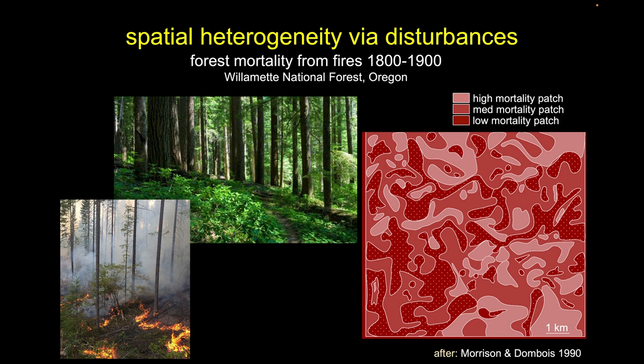Researchers in the late 1980s mapped this in a very detailed fashion. Looking at a map of this patch of forest, we see different patches of different ages. Areas that have high mortality have very few large trees remaining; areas with very low mortality have many large-diameter, thick old trees. At the scale of kilometers, this heterogeneity is really a product of historic forest fires that naturally occurred well over 100 years ago.